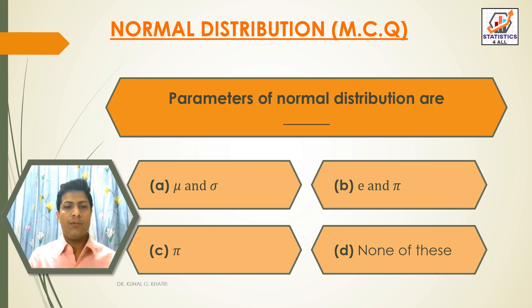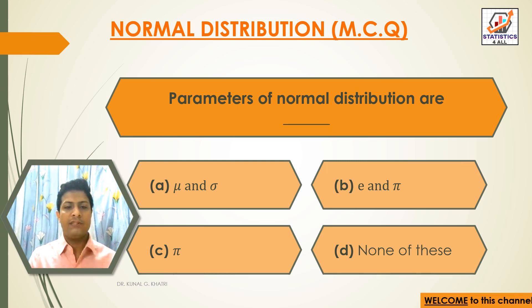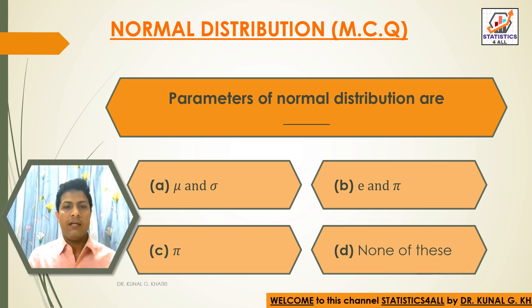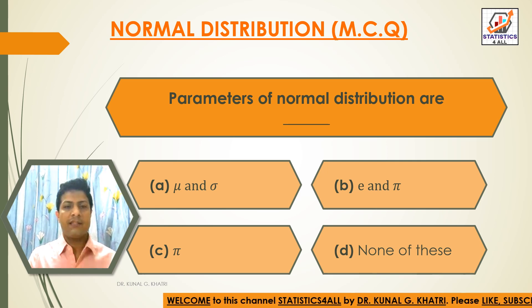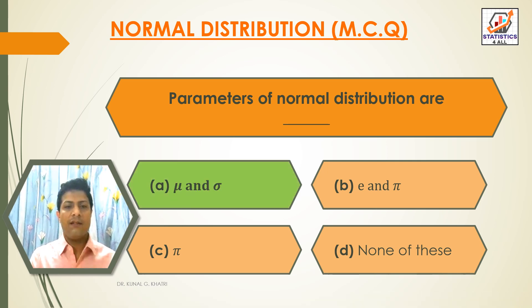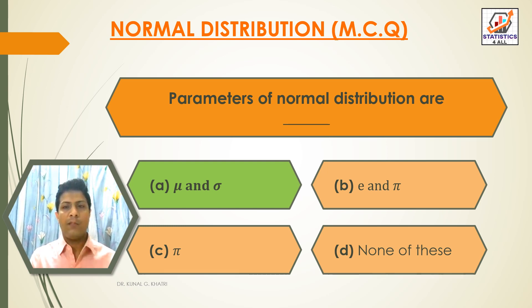Next question: Parameters of normal distribution are — Option A: mu and sigma. Option B: pi. Option C: pi. Option D: none of these. The answer is Option A — mu and sigma. The parameters of normal distribution are mu and sigma.